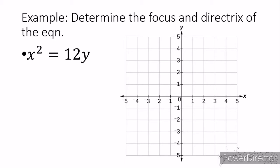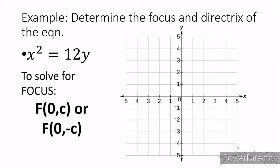We are going to determine the focus and the directrix of the equation x squared is equal to 12y. To find our focus, we must determine whether our focus lies above or below our parabola. Our equation is x squared is equal to 12y, which matches the form x squared is equal to 4cy. Therefore, we can predict that this parabola opens upward.